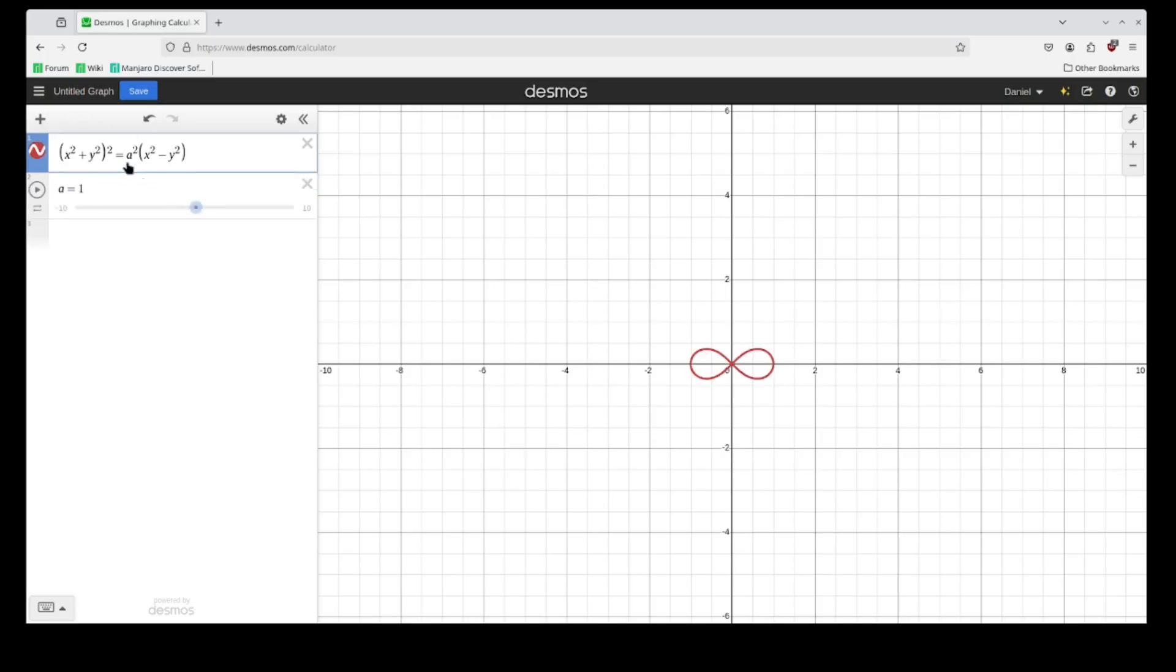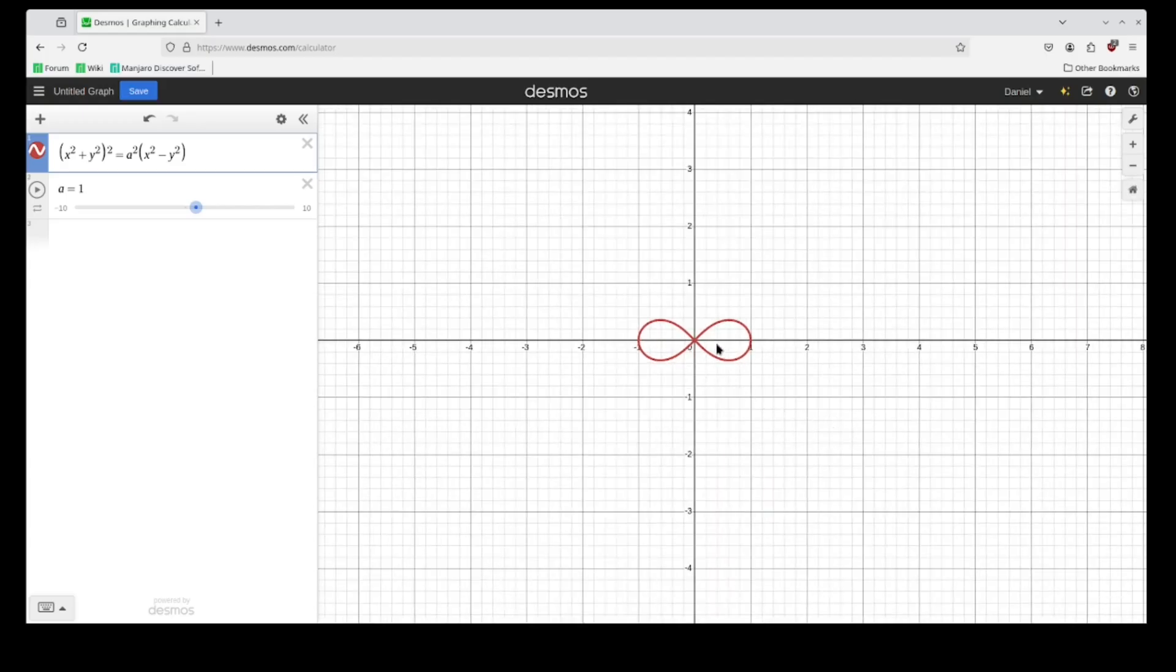Let's add a slider. You can see that we get this infinite loop shape and the way we get this to look more like a bowtie with sharper turns is by increasing these exponents in even amounts.